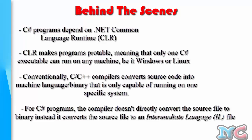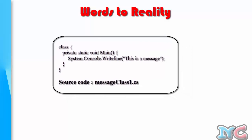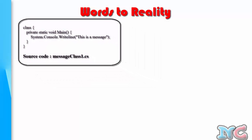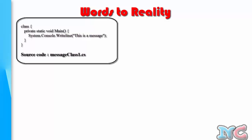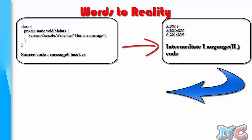By contrast, when you create a program using C that only runs on Windows XP, it can only run on XP machines — it won't work on Linux. Putting this into perspective: the source code we created — messageclass1.cs — is first converted into an intermediate language by the compiler, and that intermediate language is then converted by the same compiler into machine language.